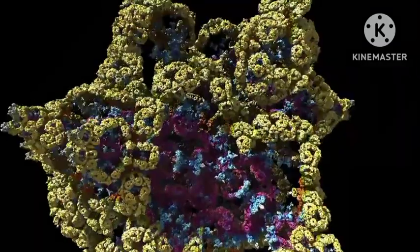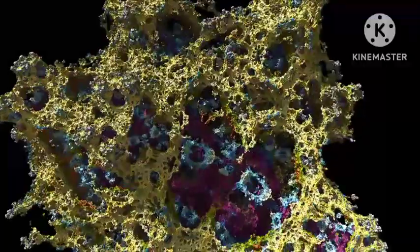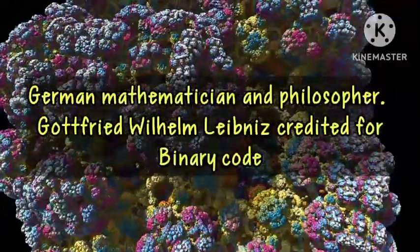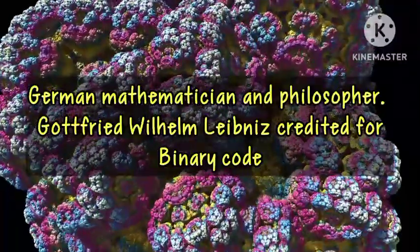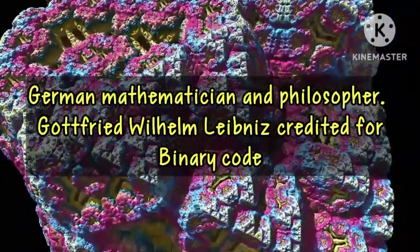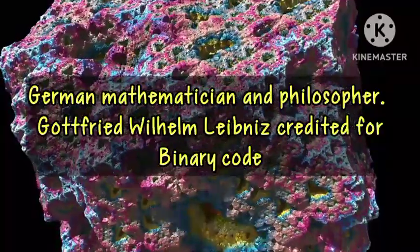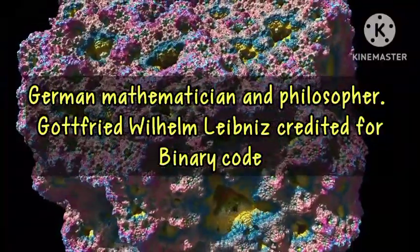I'm listening. So we all know that Gottfried Wilhelm Leibniz is credited with developing binary code in the 17th century. Right, the ones and zeros that make computers work. Exactly. But there's this theory that African societies might have been using binary systems centuries earlier.